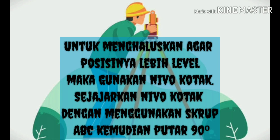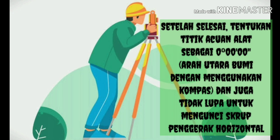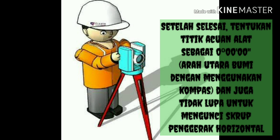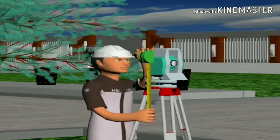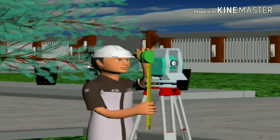Setelah posisi gelembung pada nifo tabung ada di tengah, maka alat sudah dalam keadaan waterpass, walau masih dalam keadaan kasar. Untuk menghaluskan agar posisinya lebih level, maka gunakan nifo kotak. Sejajarkan nifo kotak dengan menggunakan skrup ABC, kemudian putar 90 derajat. Setelah selesai, tentukan titik acuan alat sebagai 0 derajat, 0 menit, dan 0 detik, atau arah utara bumi dengan menggunakan kompas, dan kunci skrup penggerak horizontal. Setelah itu ukur tinggi alat dengan meteran atau roll meter dan alat siap untuk digunakan.